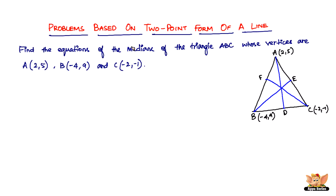We've got just one point of all those lines, but we need two points because this is the two-point form of a line. We need the points D, E, and F — the second points. That's simple: just find the midpoint of AB, the midpoint of AC, and the midpoint of BC, since the median joins a vertex to the opposite side's midpoint. The midpoint formula is: ((x1 + x2)/2, (y1 + y2)/2).